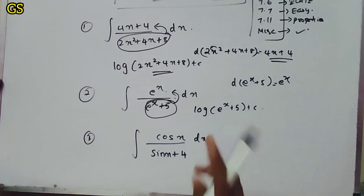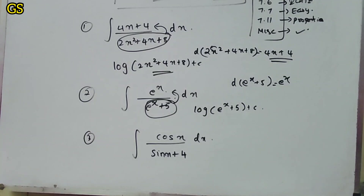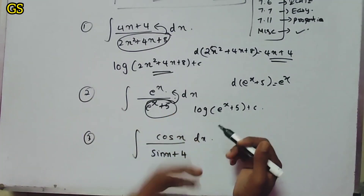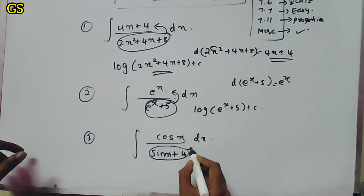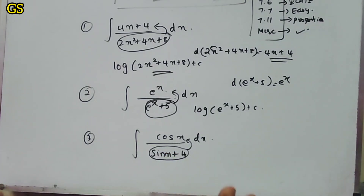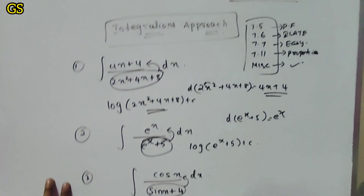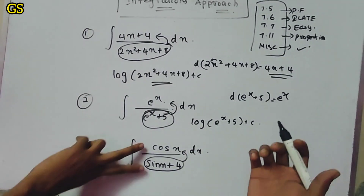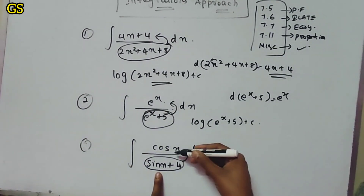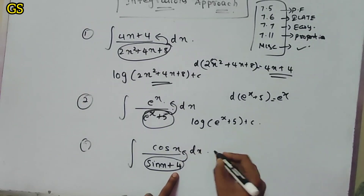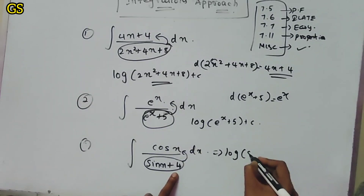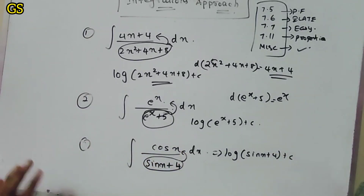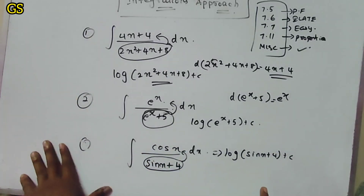In the fraction format, first one is there. In the fraction format, you approach integrations. We will try to differentiate the sin and cancel the sin. Log of sin(x+4) — to differentiate sin(x+4). This is the first type of problem.